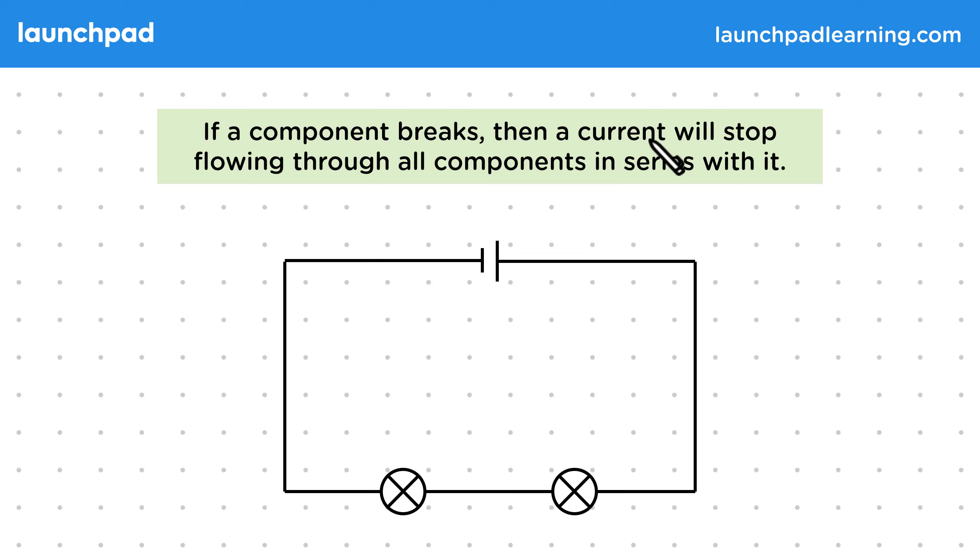So let's consider this circuit and what would happen if this lamp breaks so that a current can't flow through it?